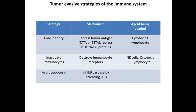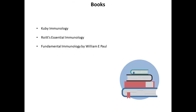Another mechanism activated in certain tumor cells is the inhibition of caspase expression. Due to this, even though the cytotoxic T lymphocyte or the NK cells are binding to the tumor cells, these tumor cells do not activate the inbuilt apoptotic mechanism, thereby protecting the cell from cell death.